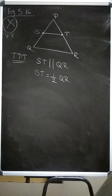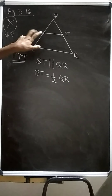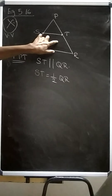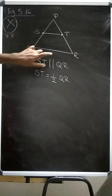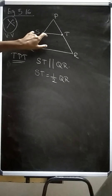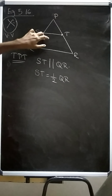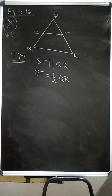Now let us re-read the question: prove analytically that the line segment joining the midpoints of two sides of a triangle is parallel to the third side and is equal to half of its length. Now let us proceed with the sum.